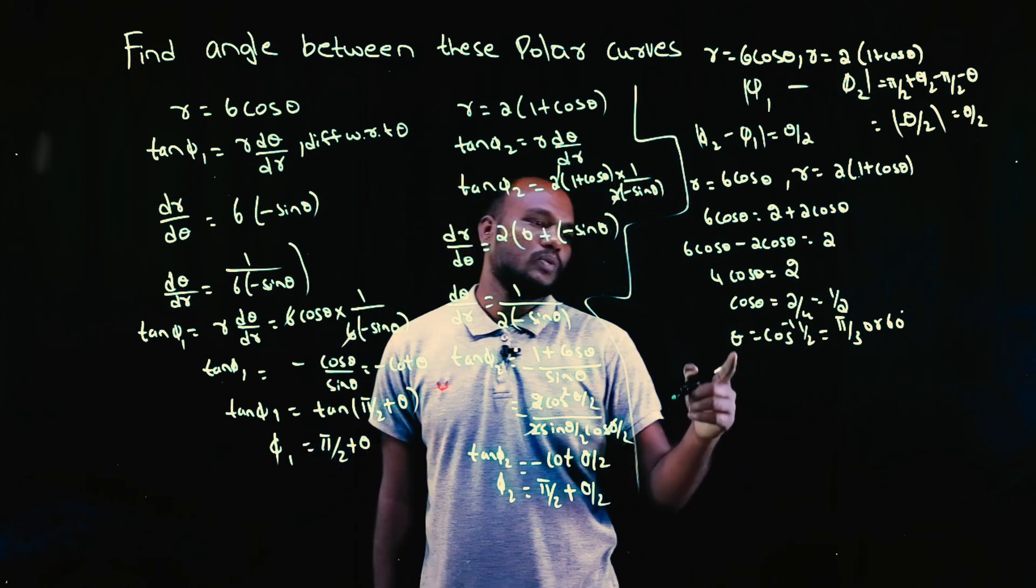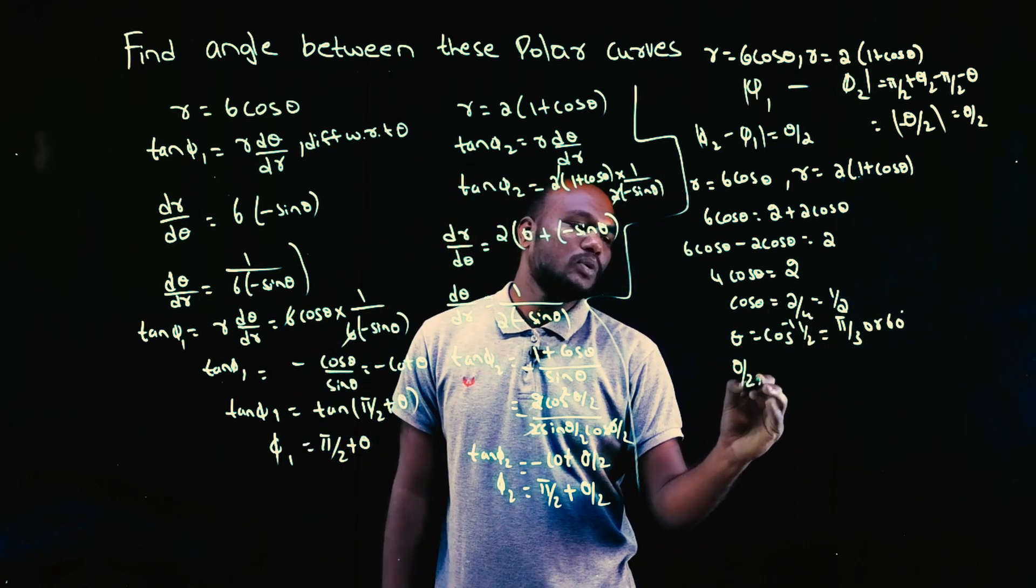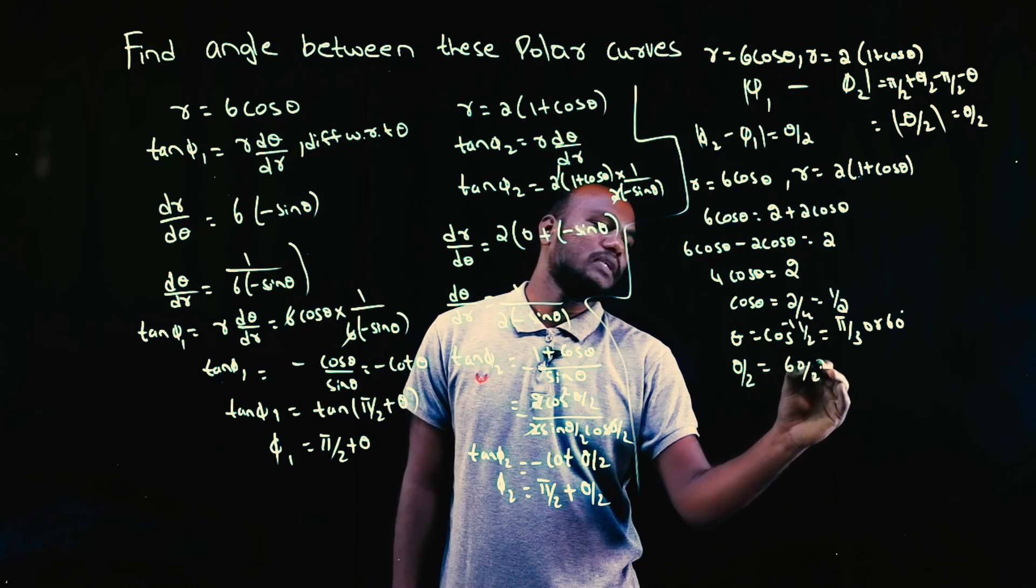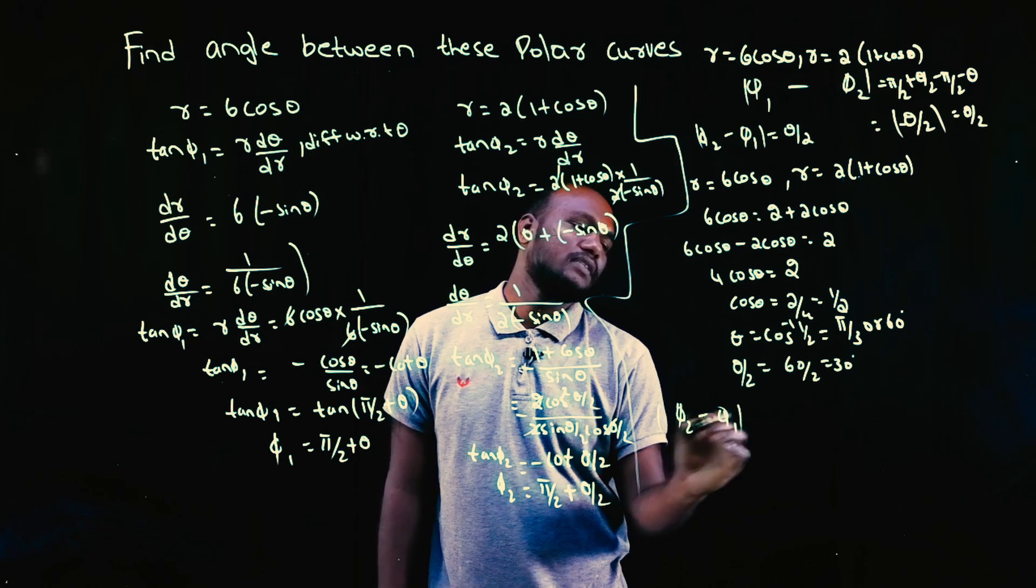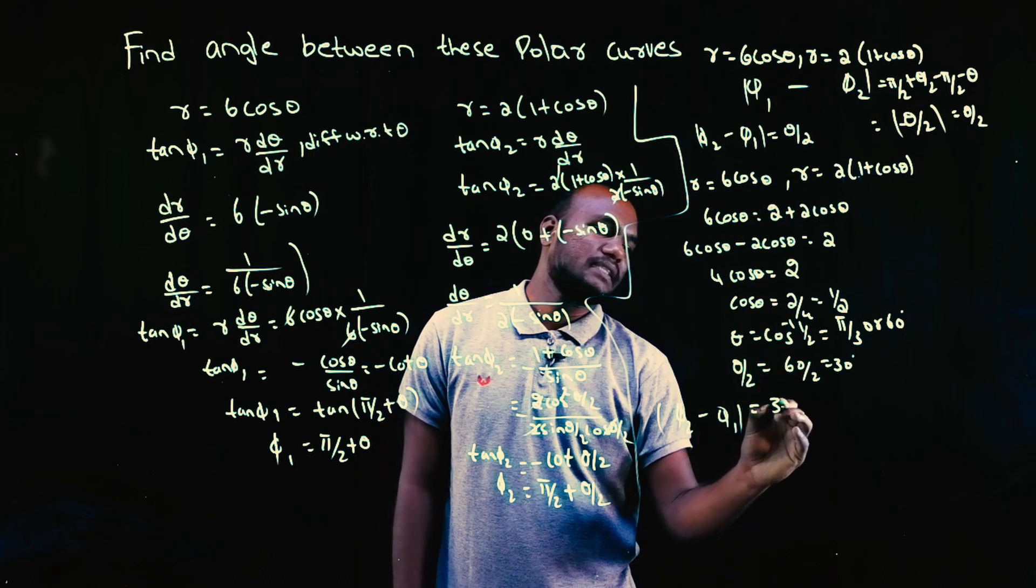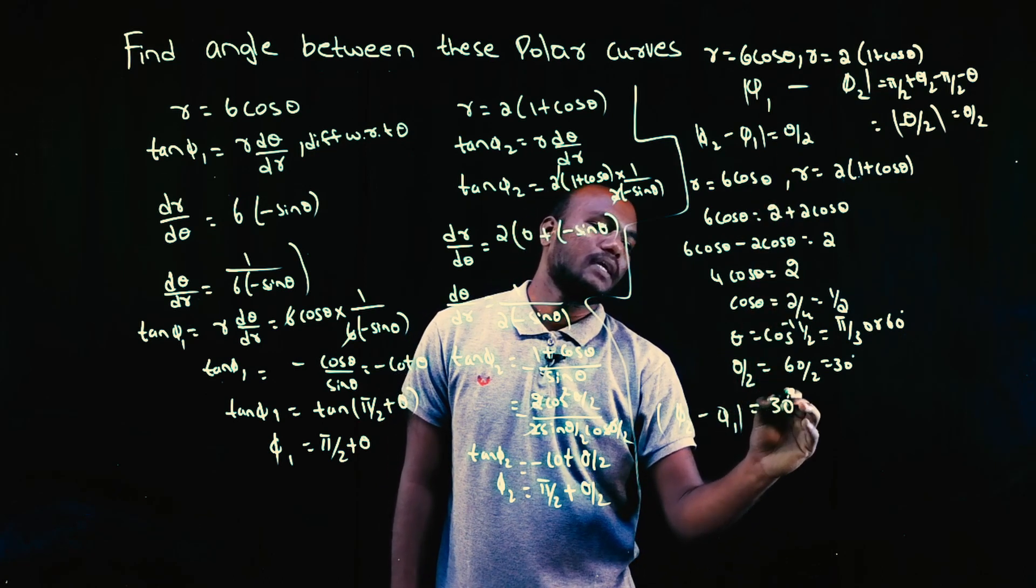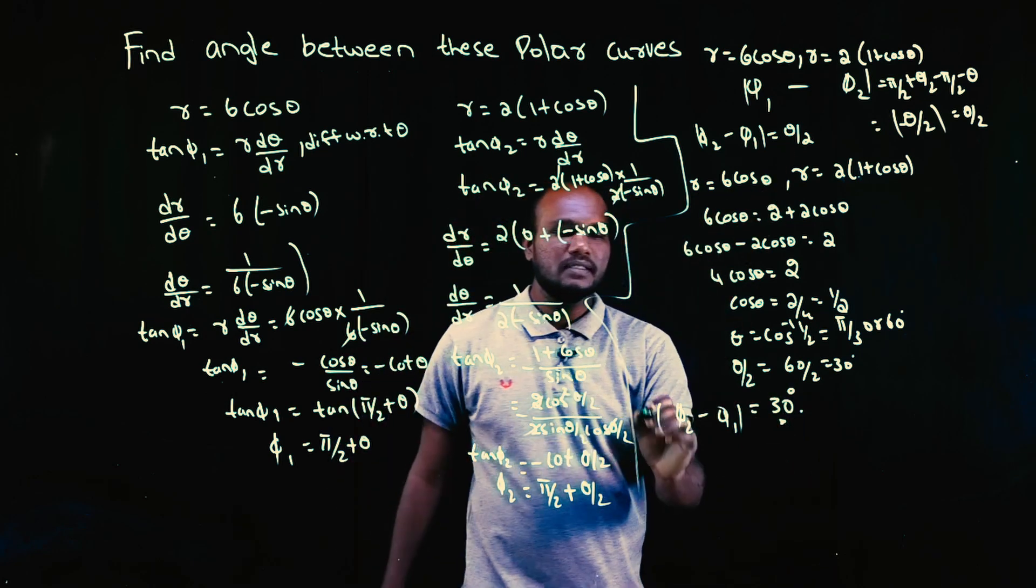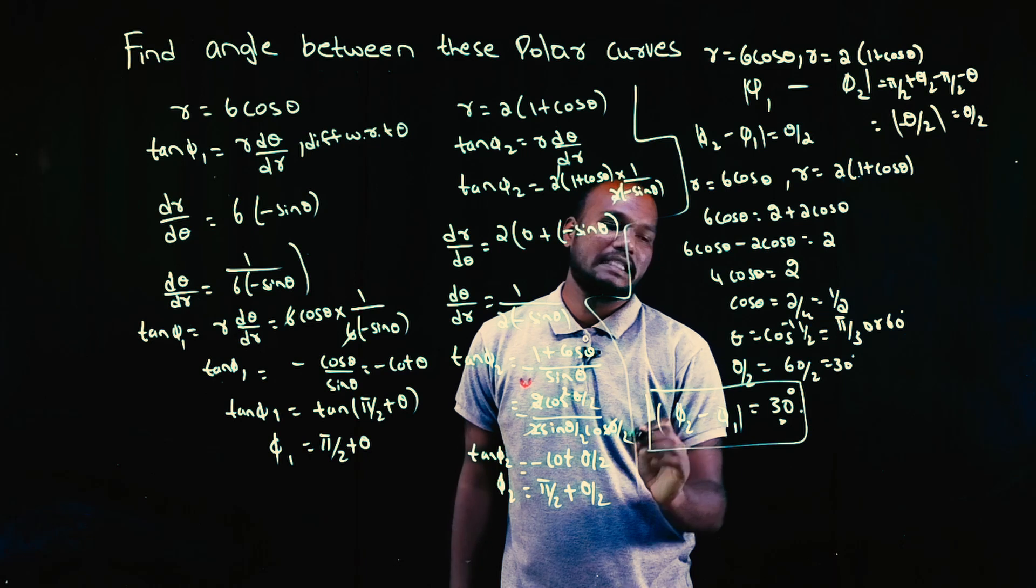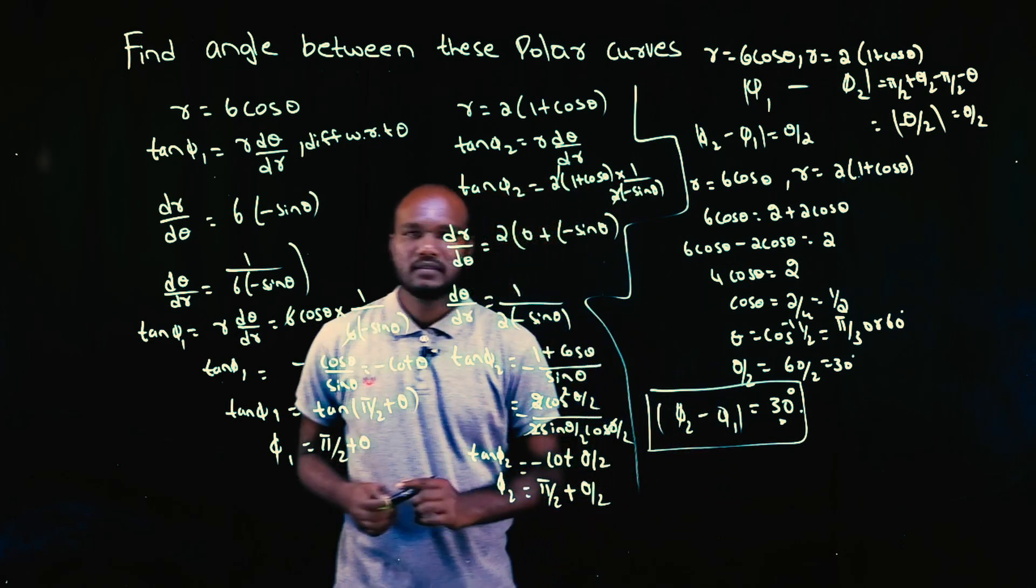So, theta by 2 value will be what? 60 by 2, that is equal to 30 degree. So, I can just substitute here. φ2 minus φ1 is equal to θ/2. That is 30 degree. 30 degree is the final solution. Or, π by 6. Is that okay?